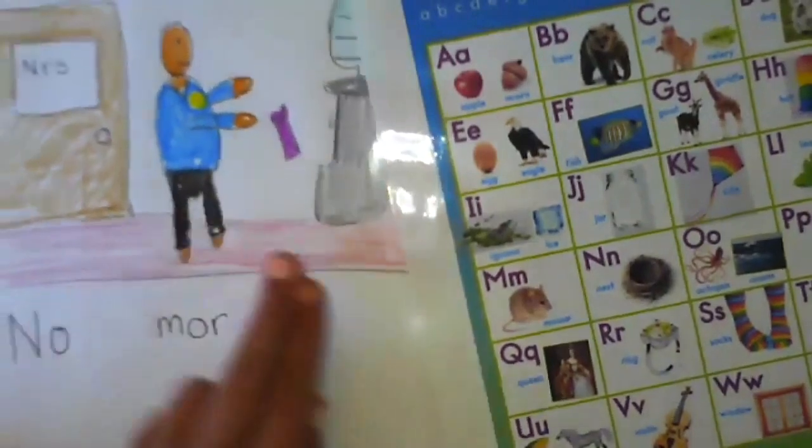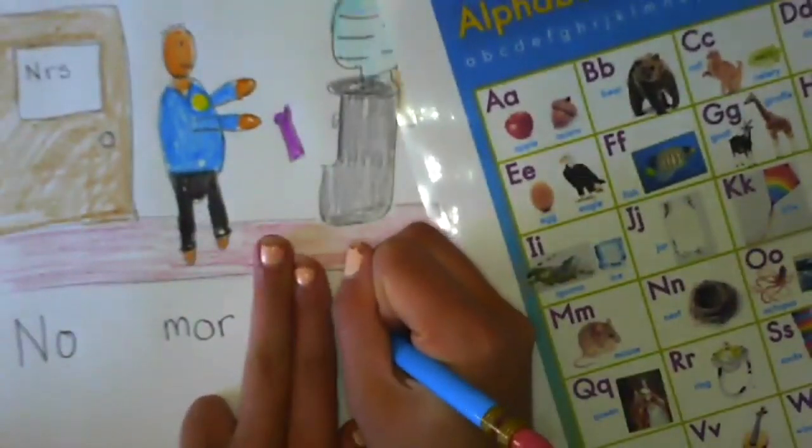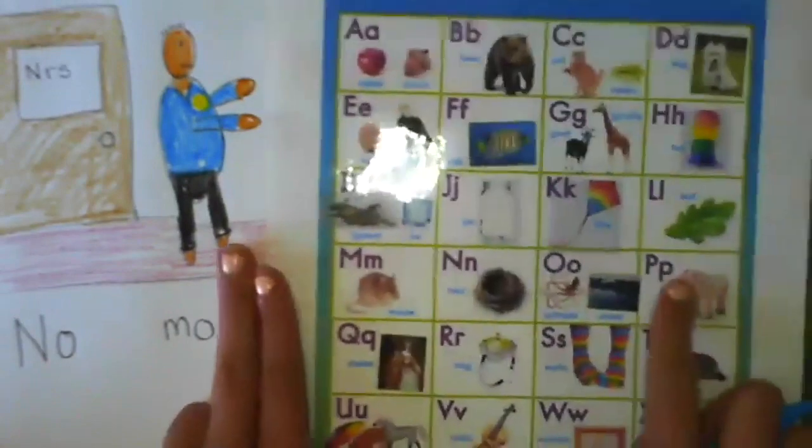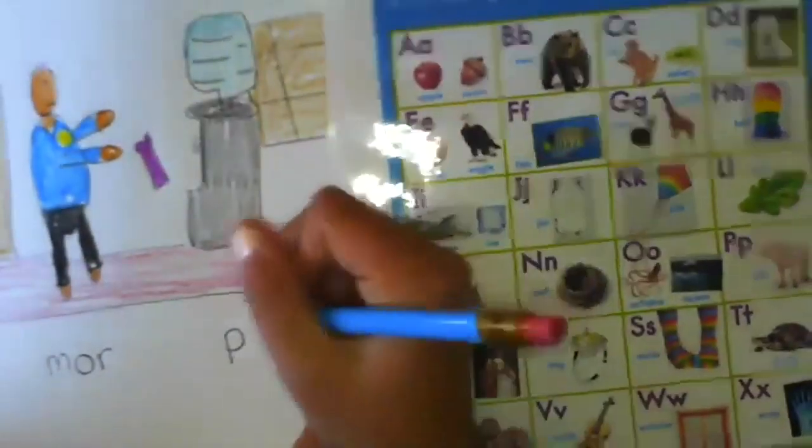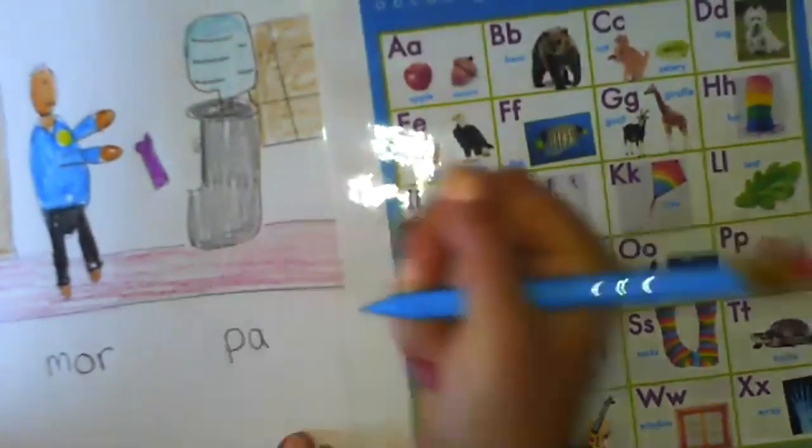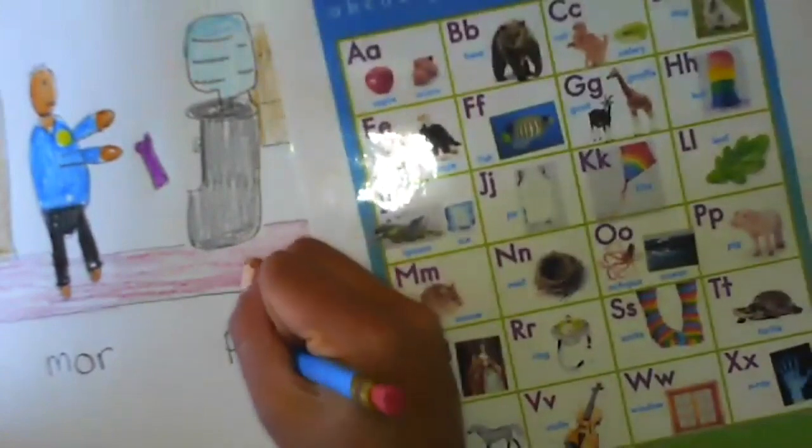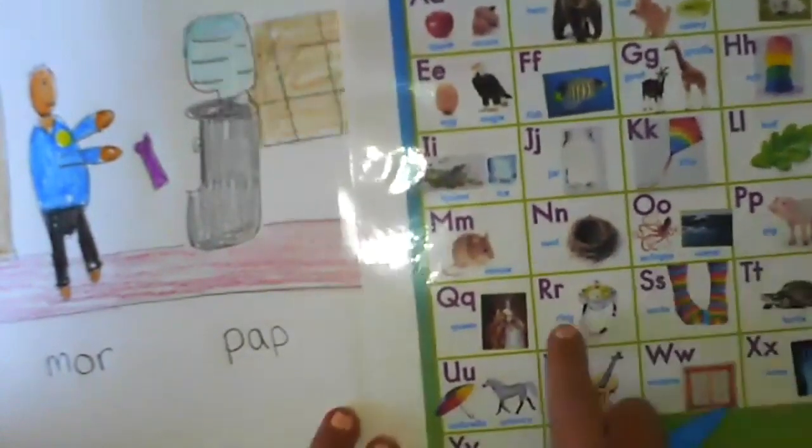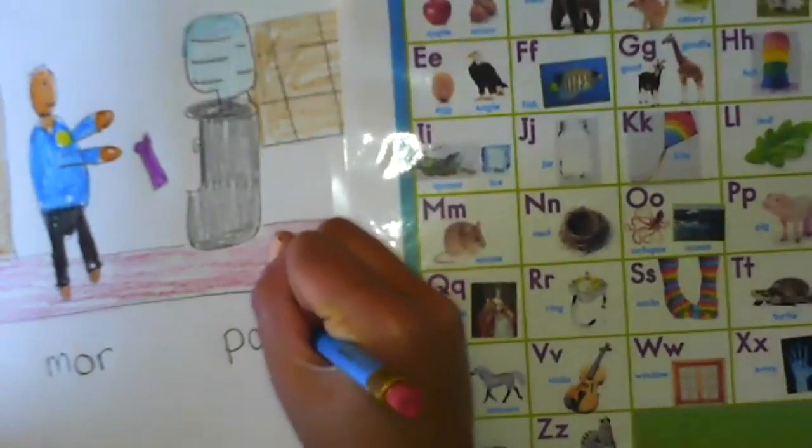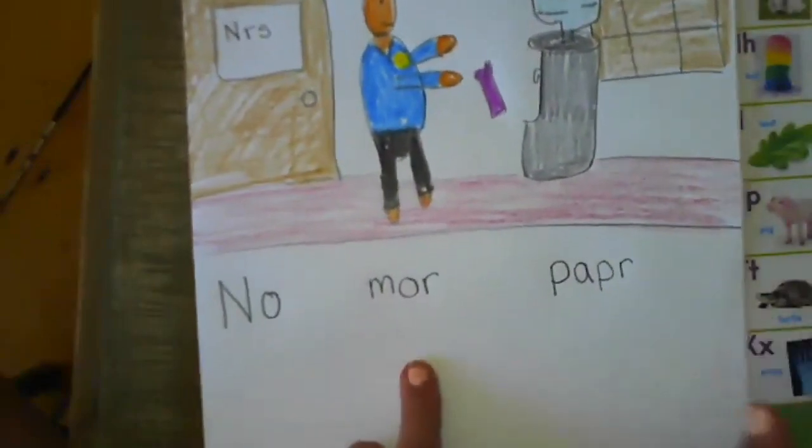No more paper. Paper, P pig P. P A acorn A, long A. P pig, paper. R ring.